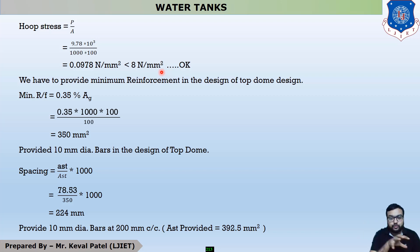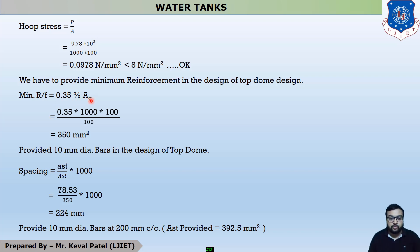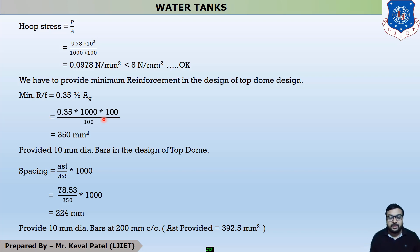After calculating force and stress, we now provide steel, which is called AST. In top dome design, we provide minimum steel. In the design of water tanks, we provide minimum steel of 0.35% of total gross sectional area. So minimum AST equals 0.35 into B (which is 1000 mm) into capital D, divided by 100. We use capital D because we take the total cross-sectional area. So we get AST equal to 350 mm². After finding AST, the next step is to find spacing.